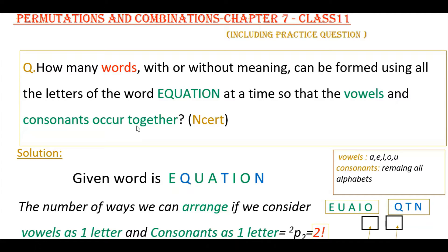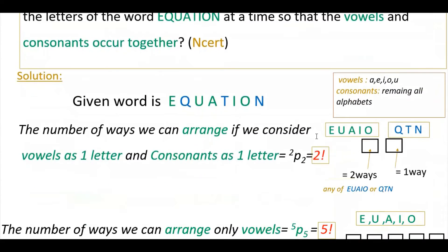The condition is that vowels and consonants must occur together. That means all the vowels must be written at one place and all the consonants at one place. If we take all the vowels as one letter and all the consonants as one letter, we have two boxes — in one box you write the vowels and in the other you write the consonants. You can swap their positions, so we need to count the number of ways to arrange these two groups.